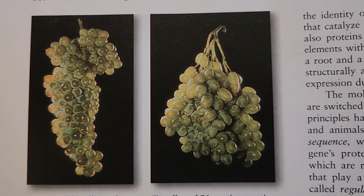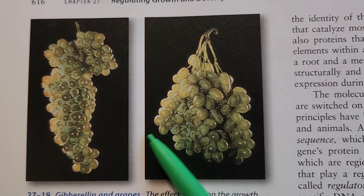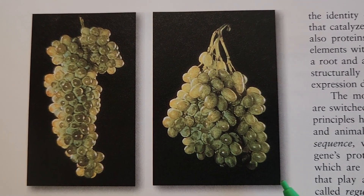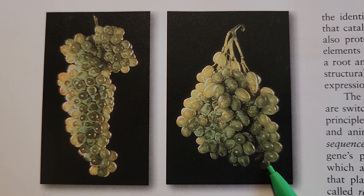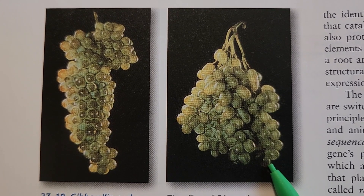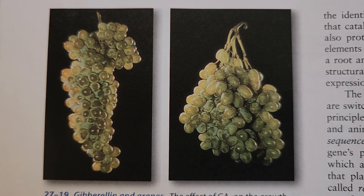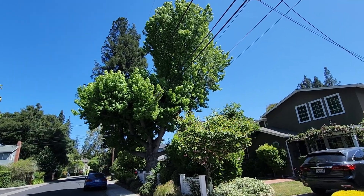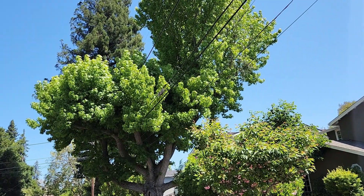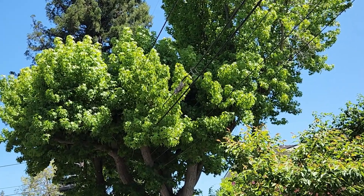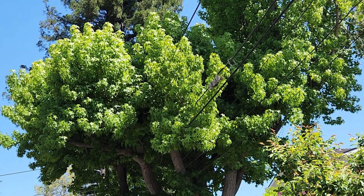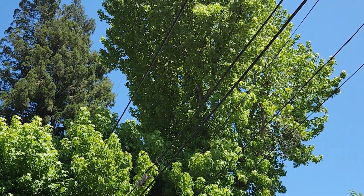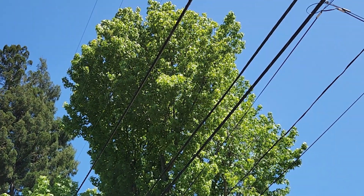Another commercial application is for grapes — gibberellins can make individual fruits larger and also make the clusters looser, making them more aesthetically pleasing to the consumer. Since plant growth and response is governed by these chemicals, it's important to know them so you understand how a tree will respond to management decisions like pruning or chemical application.